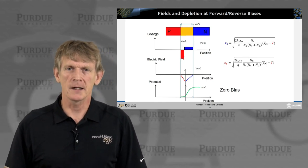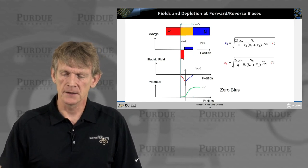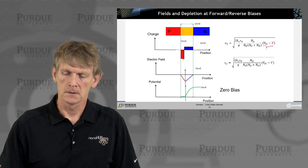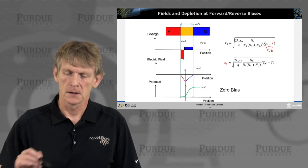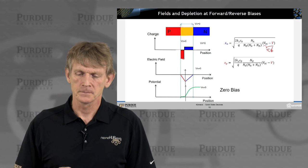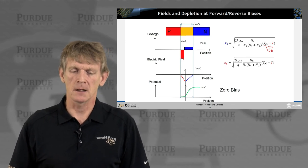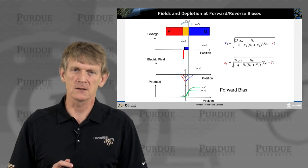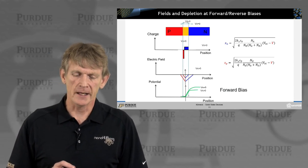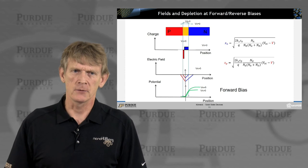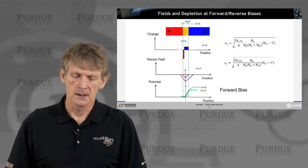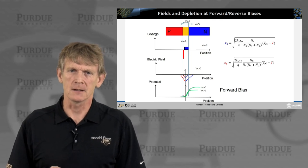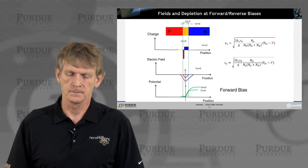Now, if we apply a positive bias, we will make this term here smaller. That will become less or go down. That means XN and XP are becoming smaller. So, really, what happens is this depletion region is getting smaller. The electric field in that region is also getting smaller. And that means the potential rise is getting smaller and the barrier is getting smaller. So, the barrier is getting smaller for the electrons.